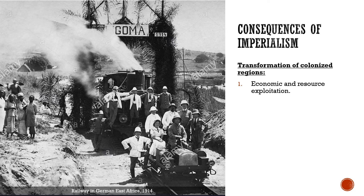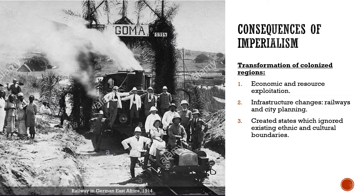There was also quite a bit of infrastructure change — throughout Africa, we see the construction of railways and city planning, which obviously transforms the visible landscape of the colonized countries. When the Europeans left, they created states which essentially ignored the existing ethnic and cultural boundaries. After World War One, when Europeans began to disentangle themselves from their African and Asian possessions, the boundaries they created set up an environment where war was going to be inevitable, because Europeans paid no attention whatsoever to the existing divisions — whether on ethnic, linguistic, or cultural lines. We are still living with those legacies today.